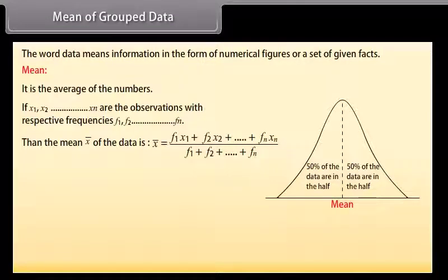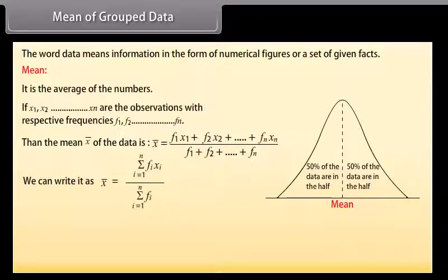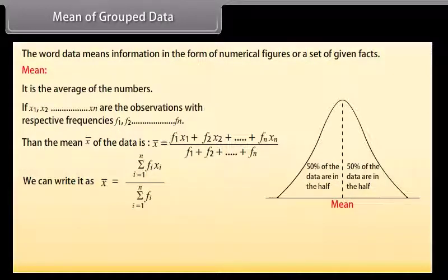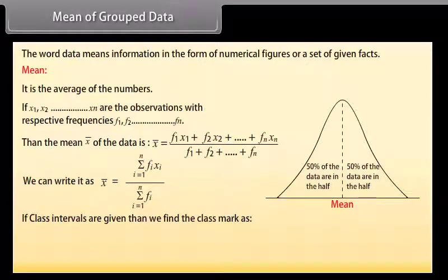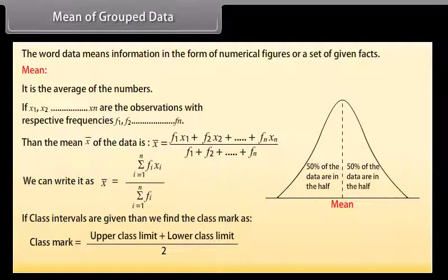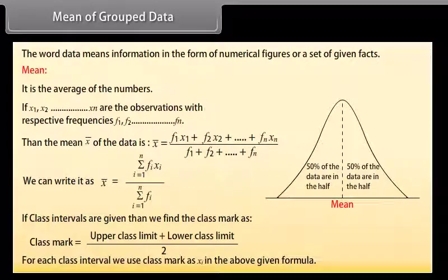then the mean x-bar of the data is: x-bar equals (f1·x1 + f2·x2 + ... + fn·xn) divided by (f1 + f2 + ... + fn). We can write it as x-bar equals summation of fi·xi from i=1 to n, divided by summation of fi. If class intervals are given, we find the class mark as: class mark equals (upper class limit + lower class limit) divided by 2. For each class interval, we use the class mark as xi in the formula.